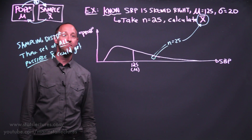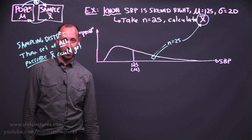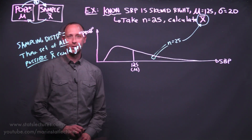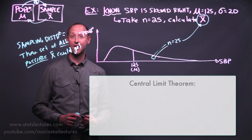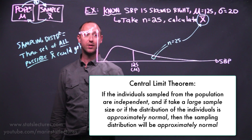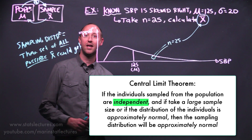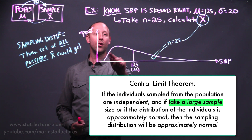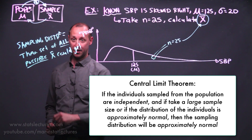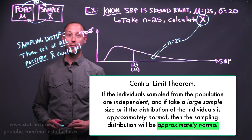To build up this concept, we're going to imagine taking samples of size 25 over and over again from this population, and looking at the distribution — the set of all the possible estimates we could have got. This is where we have the idea of the central limit theorem, which tells us: if the individuals we sample from the population are independent, and we take either a large sample size or the distribution of the individuals is approximately normal, then the sampling distribution will be approximately normal.